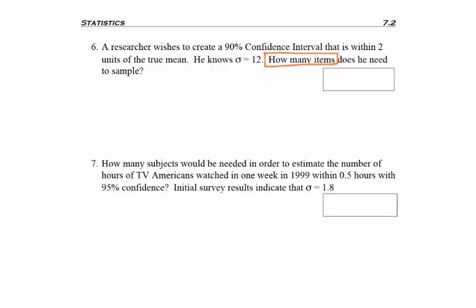It says how many items. That was the key. Even though the question has 90% confidence interval, nowhere are we told to make the confidence interval. The question reads how many items, and that makes it a sample size question. This means we need to use the sample size formula.